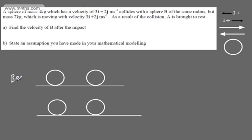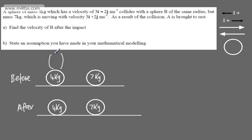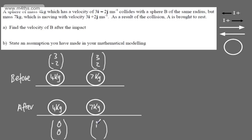Let's put the mass of each particle on. The mass of A is 4 kilograms — so 4 kilograms before and 4 kilograms after. B has a mass of 7 kilograms — so 7 kilograms before and 7 kilograms after. For the velocities, I prefer to work with column vectors. So A has velocity 3i minus 2j, written as column vector (3, -2). B has velocity 3i plus 2j, written as (3, 2). Afterwards, A is brought to rest, so that's (0, 0). And we want the velocity of B, which we'll write as pi plus qj meters per second.